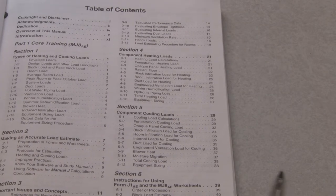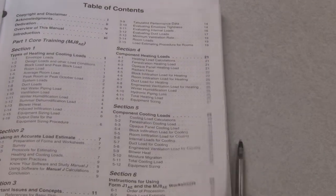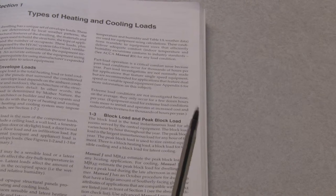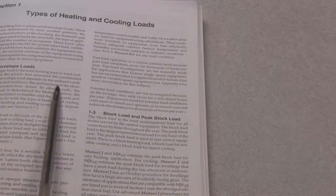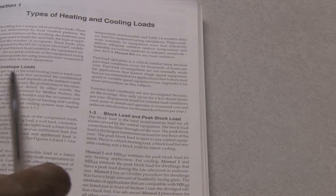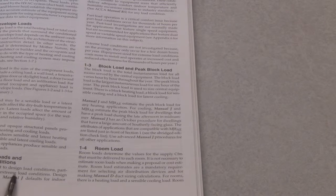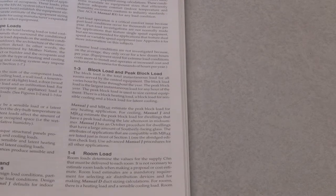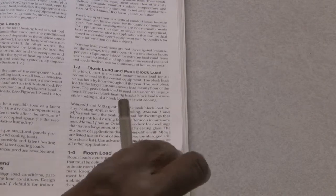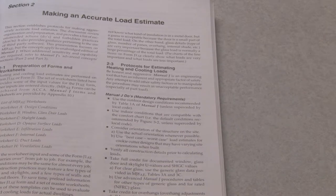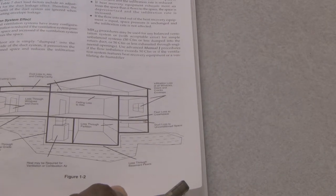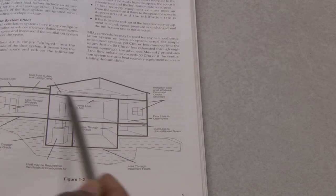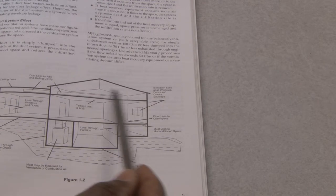We'll turn to Section 1, which starts on page 1. It gives you knowledge of envelope loads and information about design loads, as well as block loads. It includes charts and diagrams of a house to help you understand the components of a structure — what is the envelope, what is conditioned space, and what is non-conditioned space.